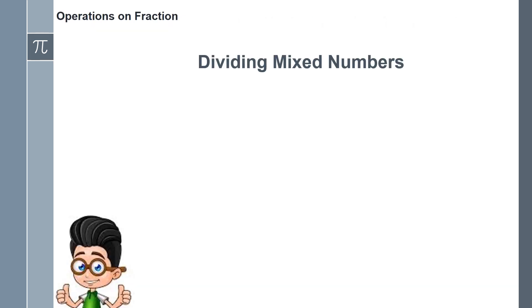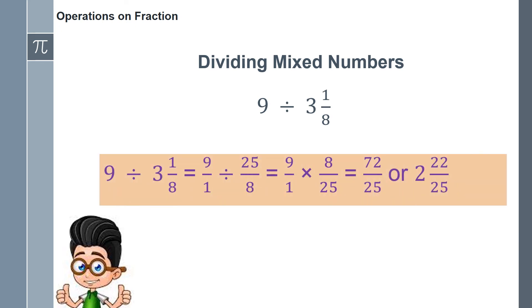To divide mixed numbers, change the whole or mixed numbers to improper fractions, then invert the divisor or divisors and multiply. For example, 9 divided by 3 and 1 eighth. 9 divided by 3 and 1 eighth equals 9 over 1 divided by 25 eighths equals 9 over 1 times 8 over 25 equals 72 over 25 or 2 and 22 over 25.